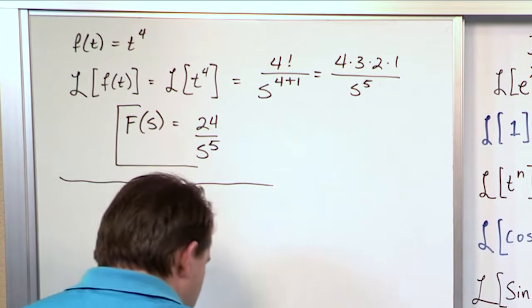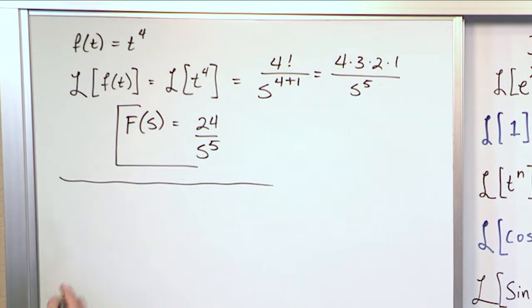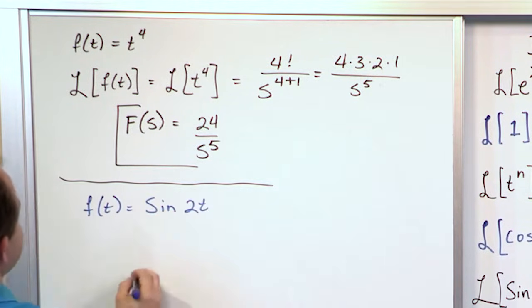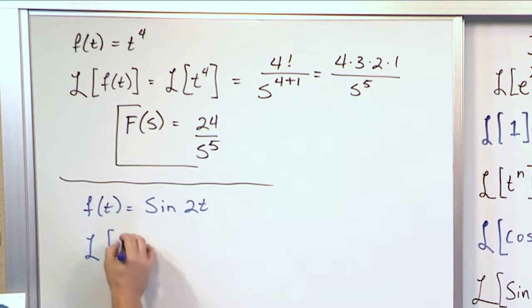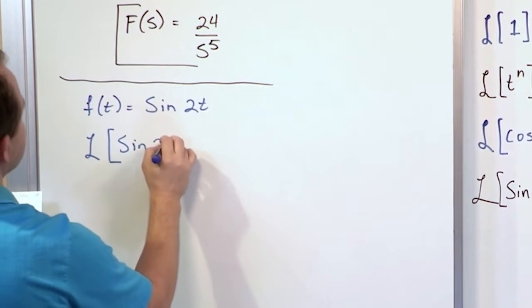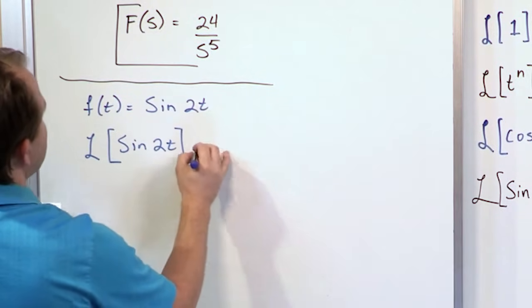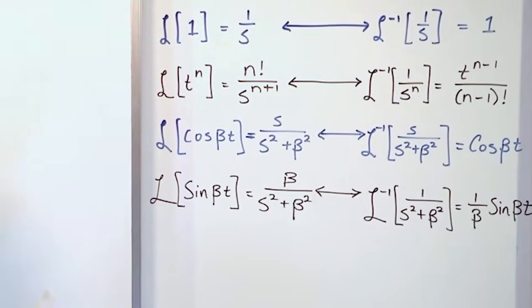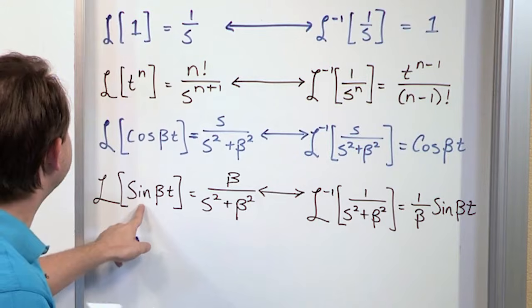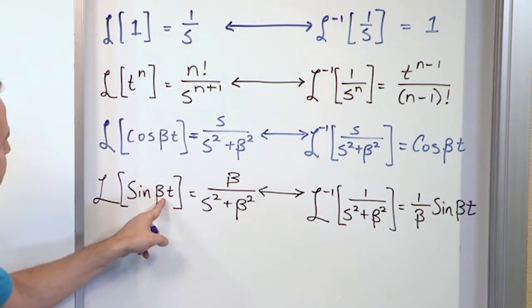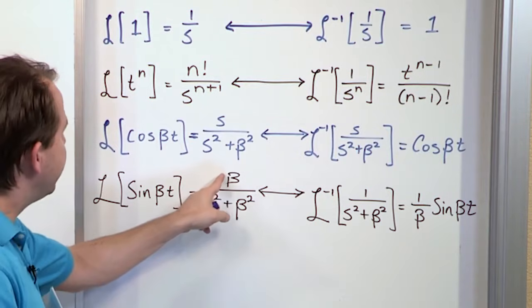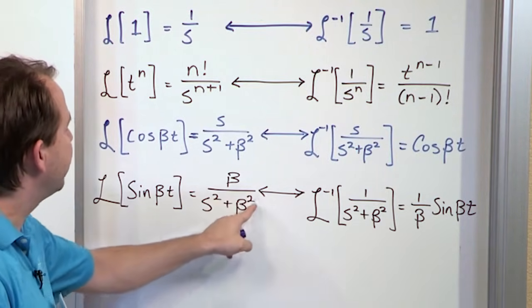Now the next problem, let me switch colors. What if we have f of t is sine of 2 times t? And you want to find the Laplace Transform of this. So you say Laplace Transform of sine 2t. And you go over here and say, is there anything that looks like that? And of course, we have a sine function right here. In this case, beta would be 2. Sine 2t, beta would be 2. It's going to be beta over s squared plus beta squared.